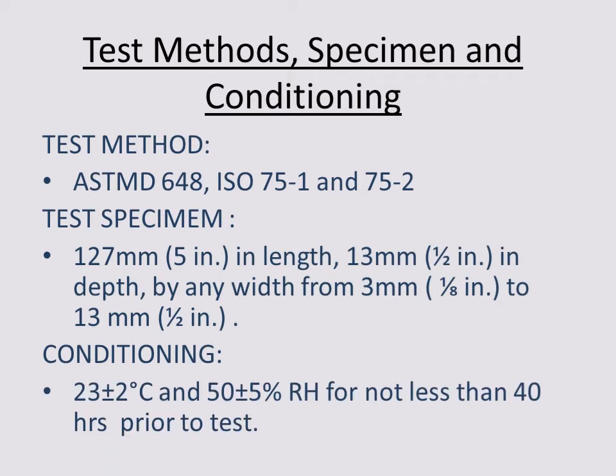The test method for HDT: the test specimen should be 127 mm (5 inch) in length, 13 mm (½ inch) in depth, by any width from 3 mm (⅛ inch) to 13 mm (½ inch).